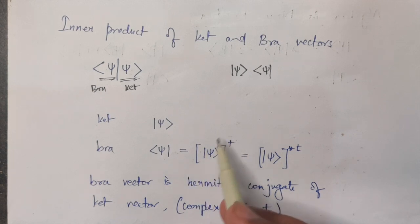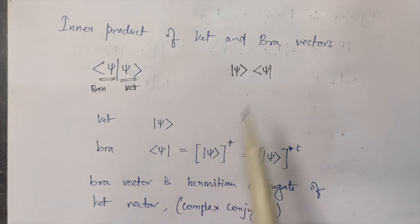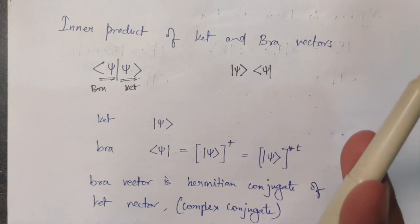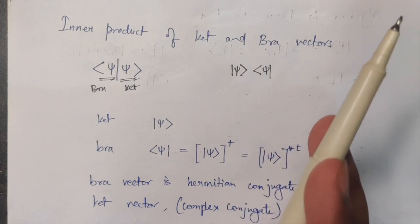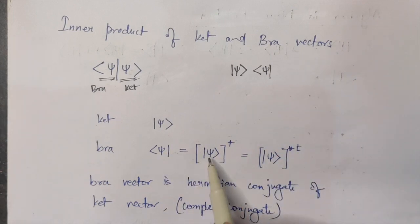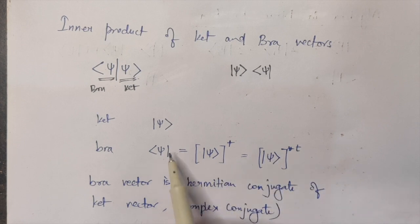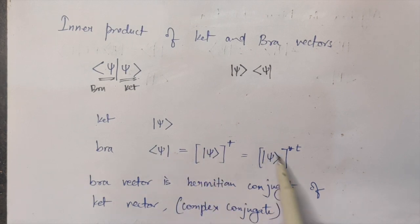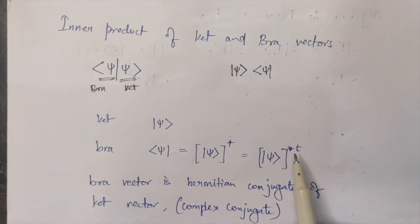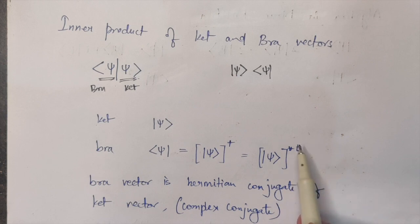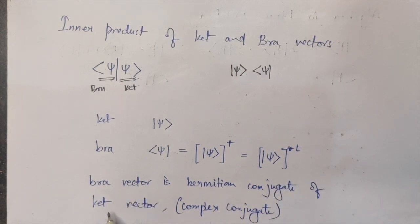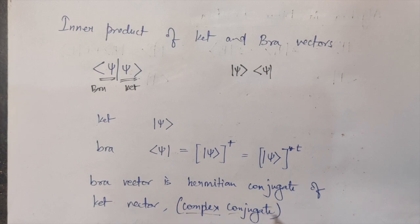The definition of the bra vector: you take the ket vector and take its Hermitian conjugate. If you don't know about Hermitian operators, I'll link a video in the i-button — you can click and watch that. So basically, the bra vector can also be expressed as taking the complex conjugate and also the transpose of the ket vector. In transpose, we convert rows into columns and columns into rows. So the bra vector is the Hermitian conjugate of your ket vector, which is the complex conjugate transpose.